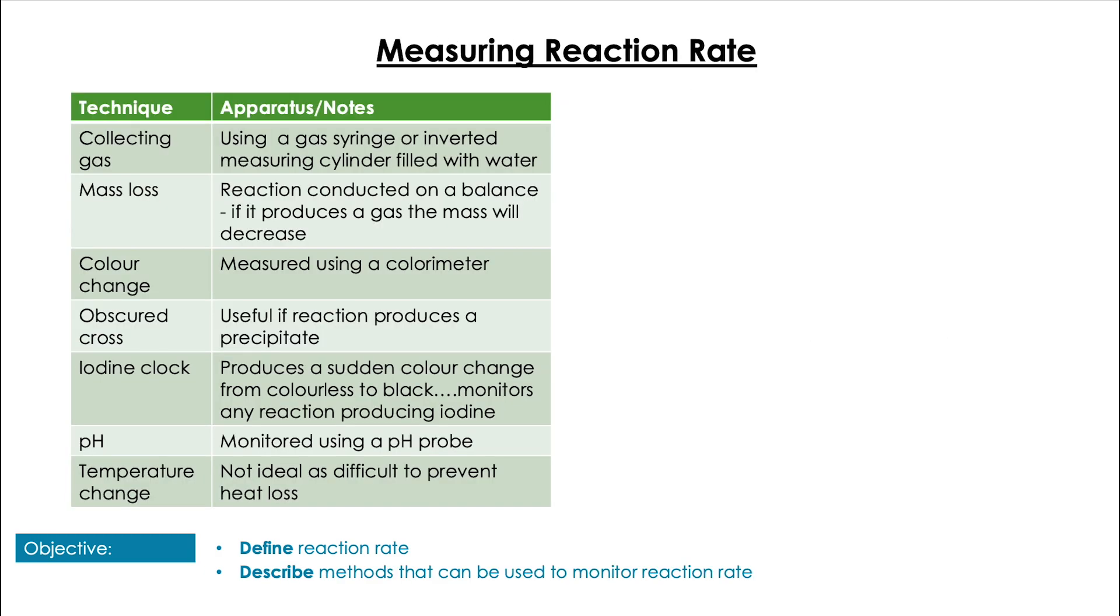In terms of measuring the rate of reaction, there are a few different ways we can do this, as I've shown on the table here. When we're thinking about what we need to look out for in terms of when we're confronted with an equation, each of these techniques could be used in different situations. For example, collecting a gas. If the products of an equation have a gas, then we could use the collecting gas method. Same with mass lost. If we have gas in the products, then mass will be lost over time.